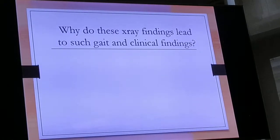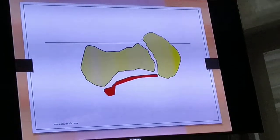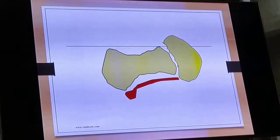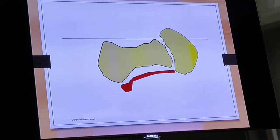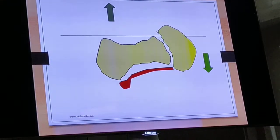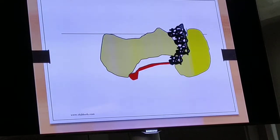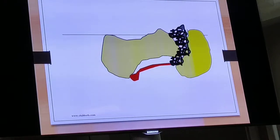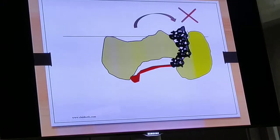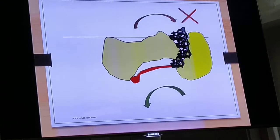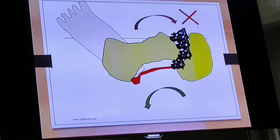Why do these X-ray findings lead to such gait and clinical abnormalities? In SCFE, the proximal femoral metaphysis goes anteriorly and the epiphysis goes posteriorly. It is a slow process, hence there is a lot of callus. The metaphysis cannot internally rotate, so it is in an external rotation deformity — and that is what is portrayed by the out-toeing gait.